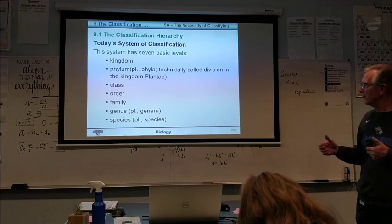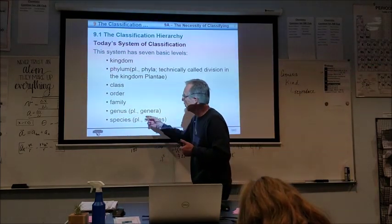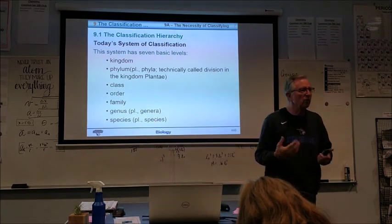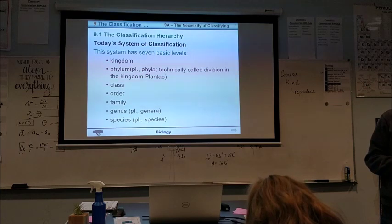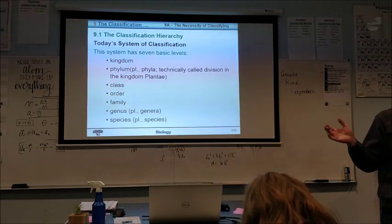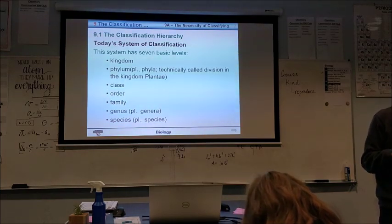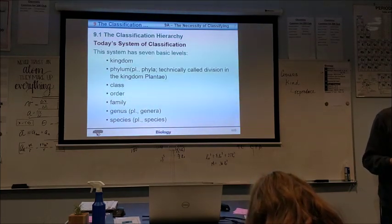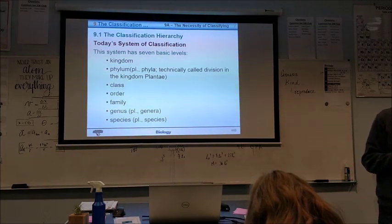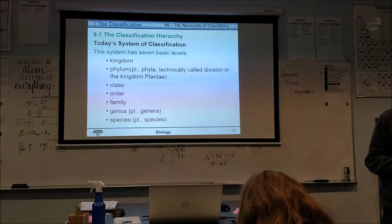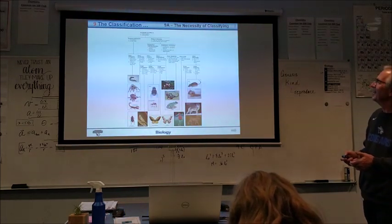And notice what species, species could be either singular or plural, we have words like that, don't we? Like if you have one deer, or you can have three deer, right? There's no deers. Now, sometimes we change the word like mouse and mice, or moose and mooses, right?